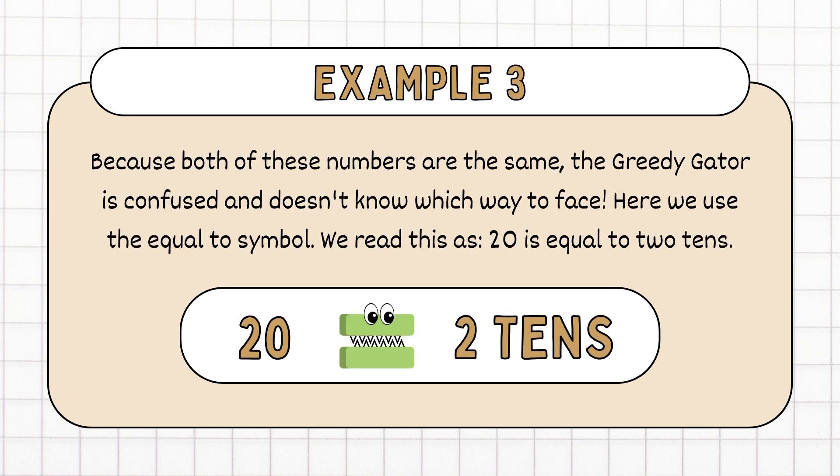Example 3: Because both of these numbers are the same, the Greedy Gator is confused and doesn't know which way to face. Here we use the equal to symbol. We read this as: 20 is equal to 20.